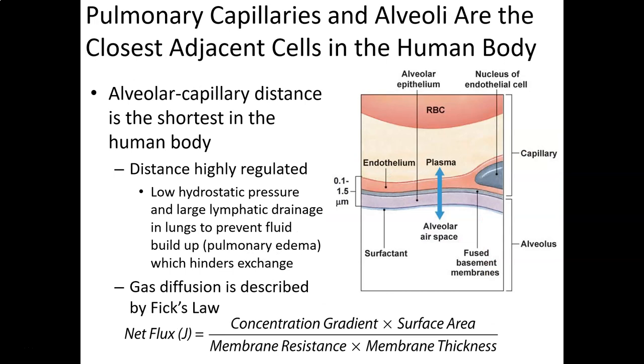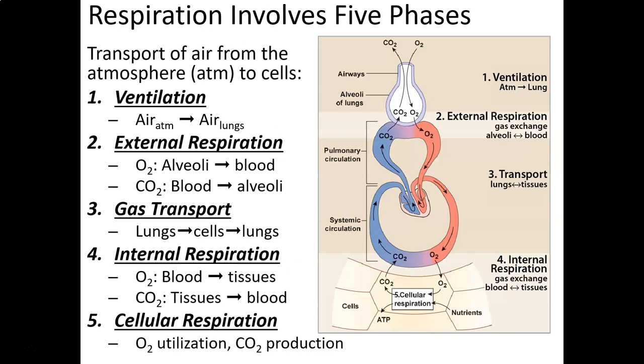You should understand the respiratory membrane, the distances involved, hydrostatic pressure changes, and how we prevent pulmonary edema. You should understand the five phases of respiration — the easiest way to remember them is as a stepwise progression of how oxygen gets from the outside world to our cells, or conversely how CO2 produced in cells gets to the outside world.